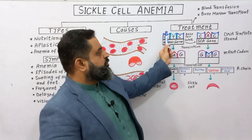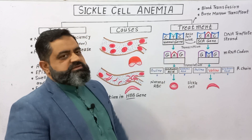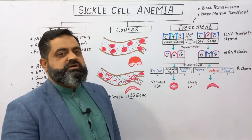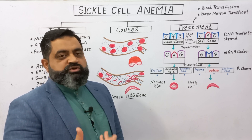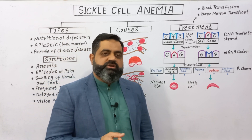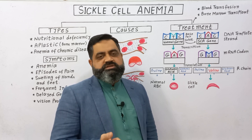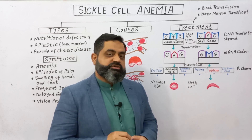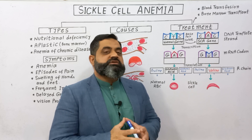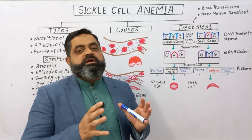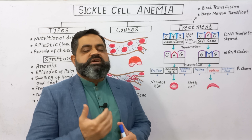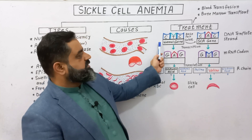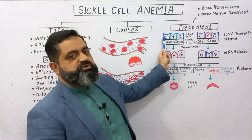In a normal person, the gene is present in the DNA. DNA contains sequences of three nucleotides known as codons, which code for certain amino acids that make up proteins. Hemoglobin is a protein composed of four chains — two alpha chains and two beta chains. Each alpha chain contains 141 amino acids and each beta chain contains 146 amino acids, for a total of 574 amino acids making up hemoglobin, which binds oxygen for transport throughout the body.